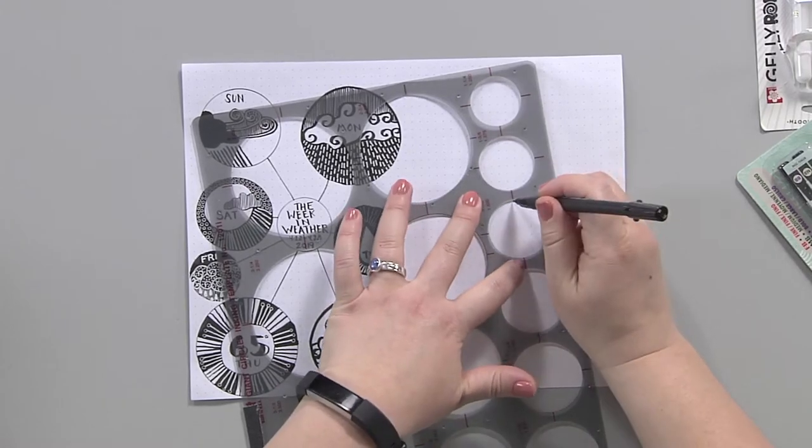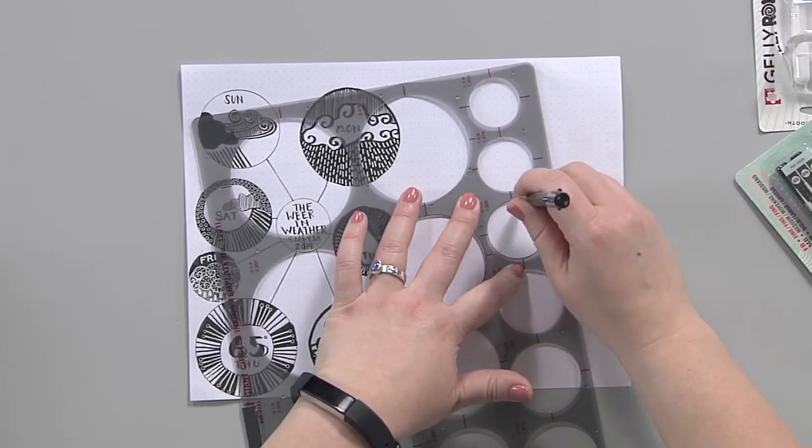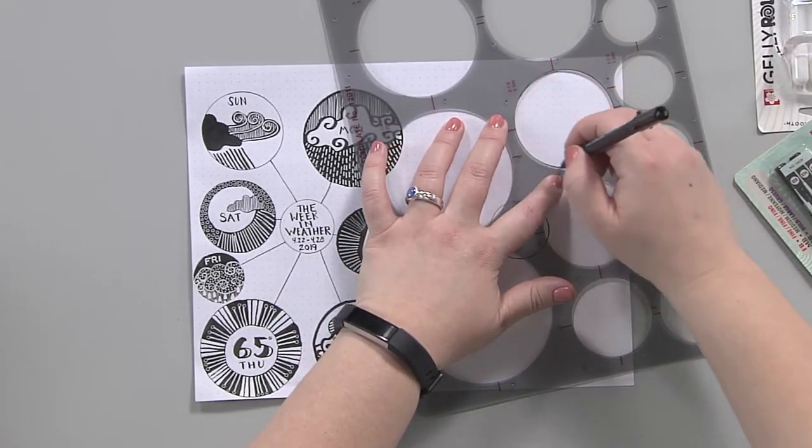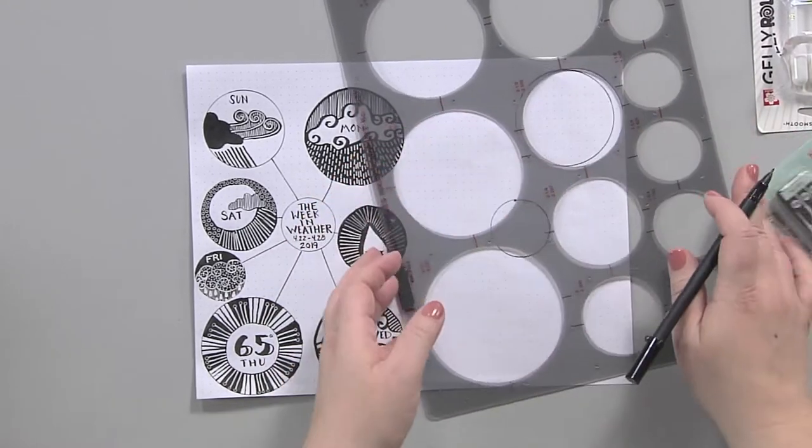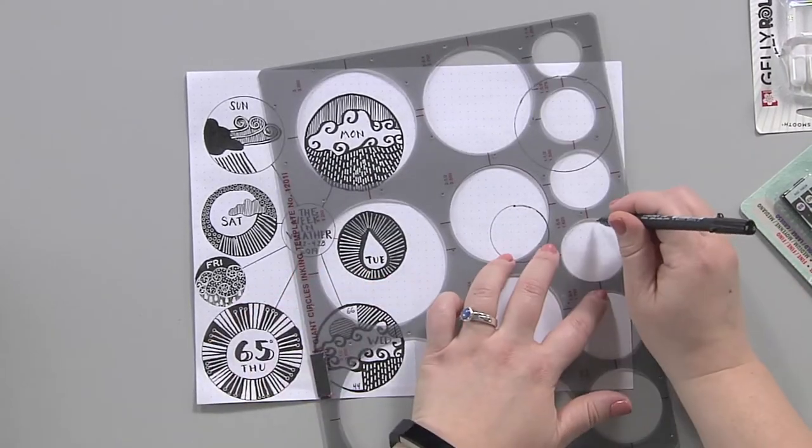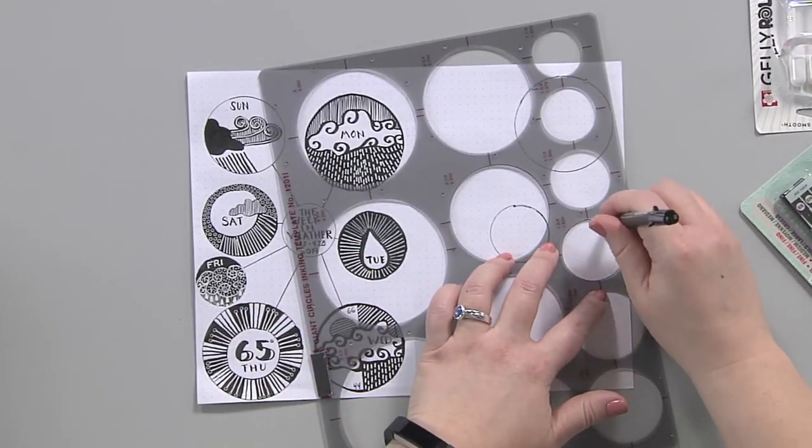I'm going to eyeball something that's kind of in the center for that first circle and then I'm going to continue around just putting down seven different circles. So I would just continue around adding my circles of different sizes. There's no right or wrong, it's whatever you want.